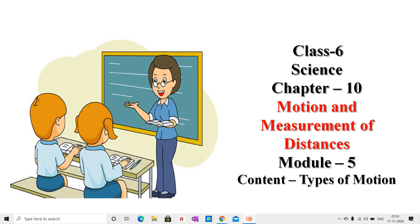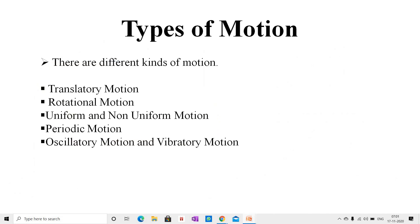So, let us start. Students, there are different kinds of motion. Translatory motion, rotational motion, uniform and non-uniform motion, periodic motion, oscillatory motion, and vibratory motion.